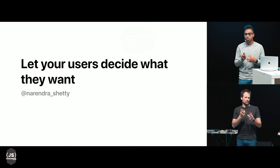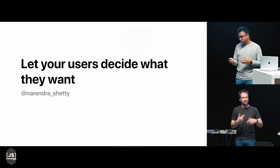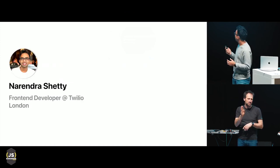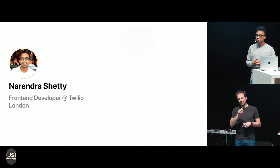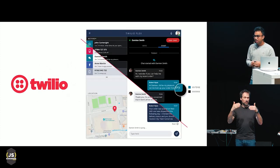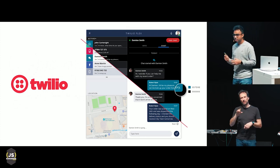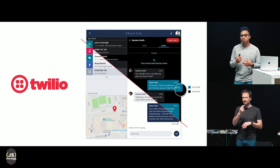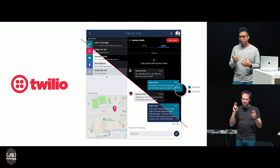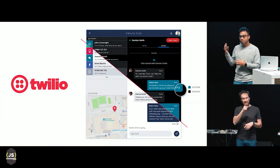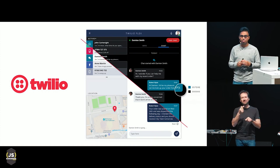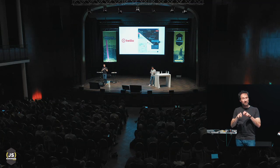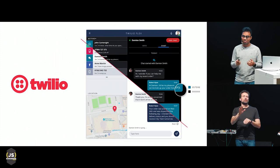So the whole idea is the process of A/B testing, and I'll go deep into it. But before that, let me introduce myself. I am Narendra, and I work as a front-end developer at Twilio in London. I work on a product called Twilio Flex, which is a programmable contact center. You might know Twilio from its programmable voice and SMS SDKs — when put together, they can build Twilio Flex, which developers can use to build their own contact center. And we are hiring, of course.